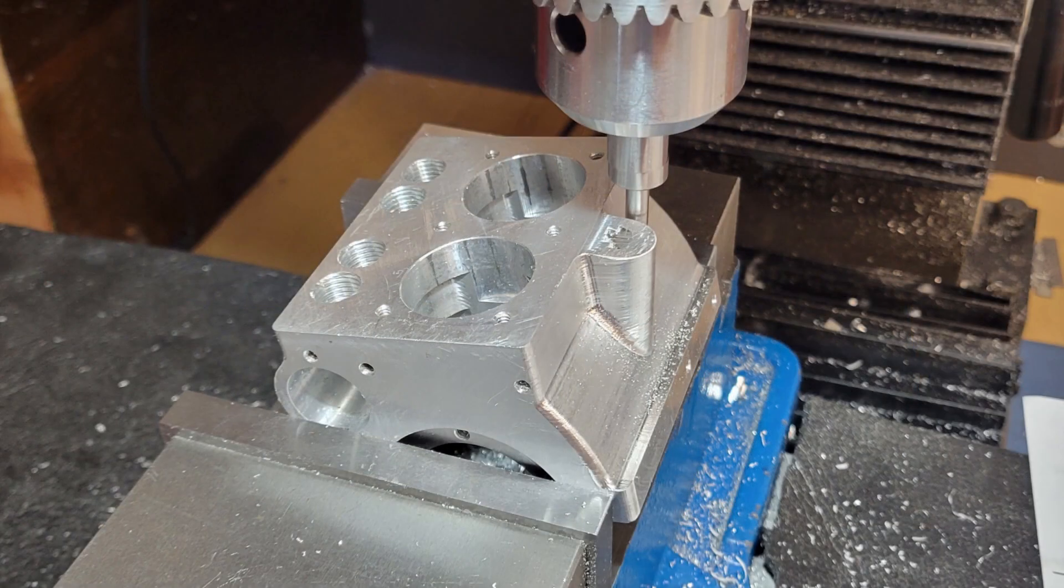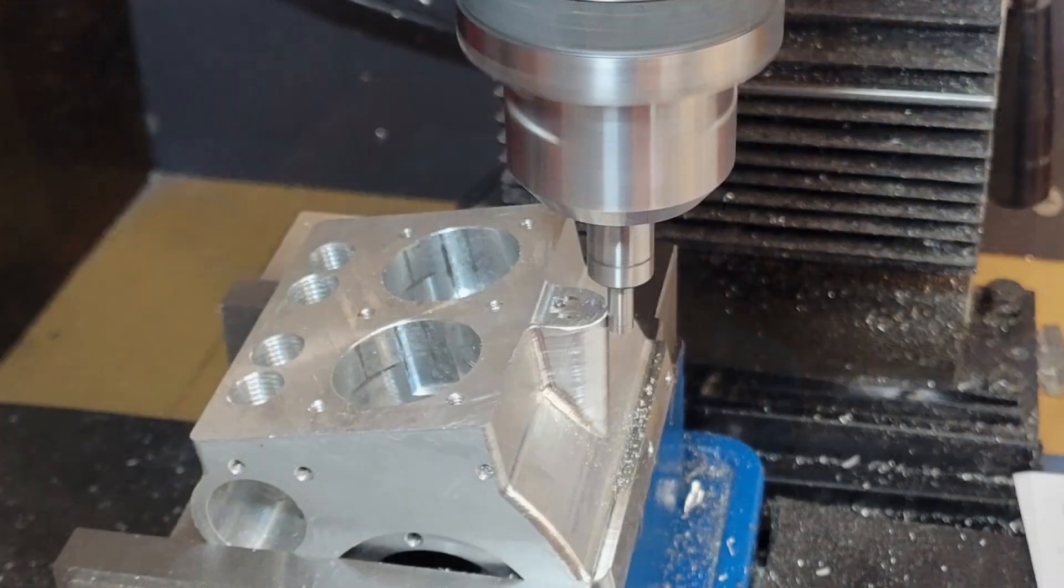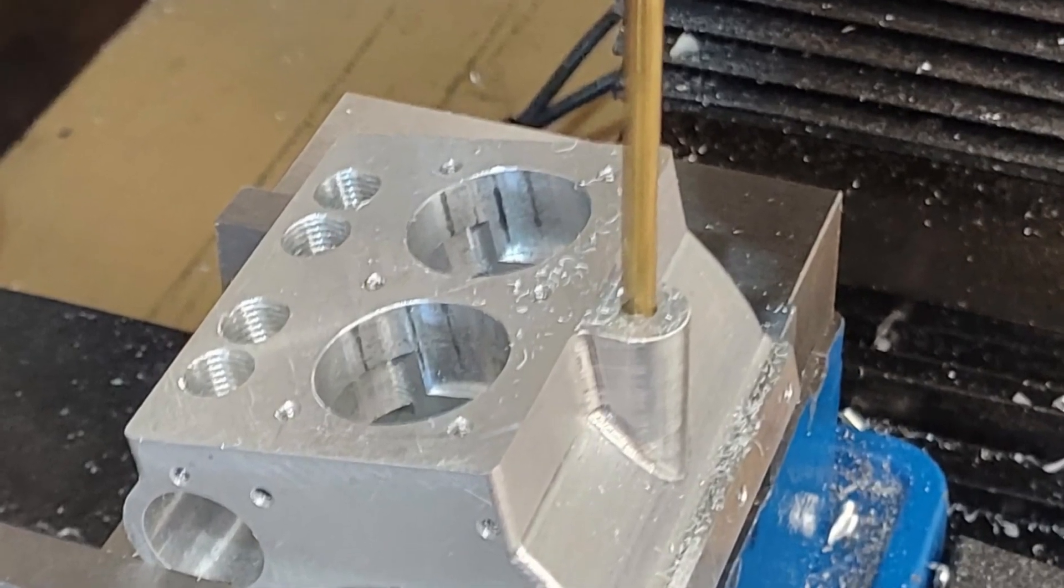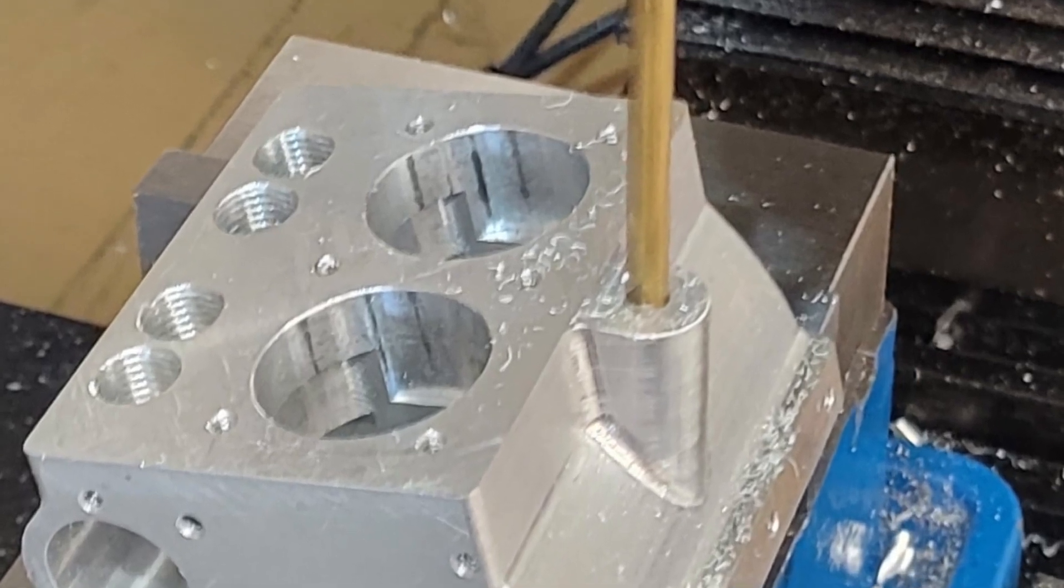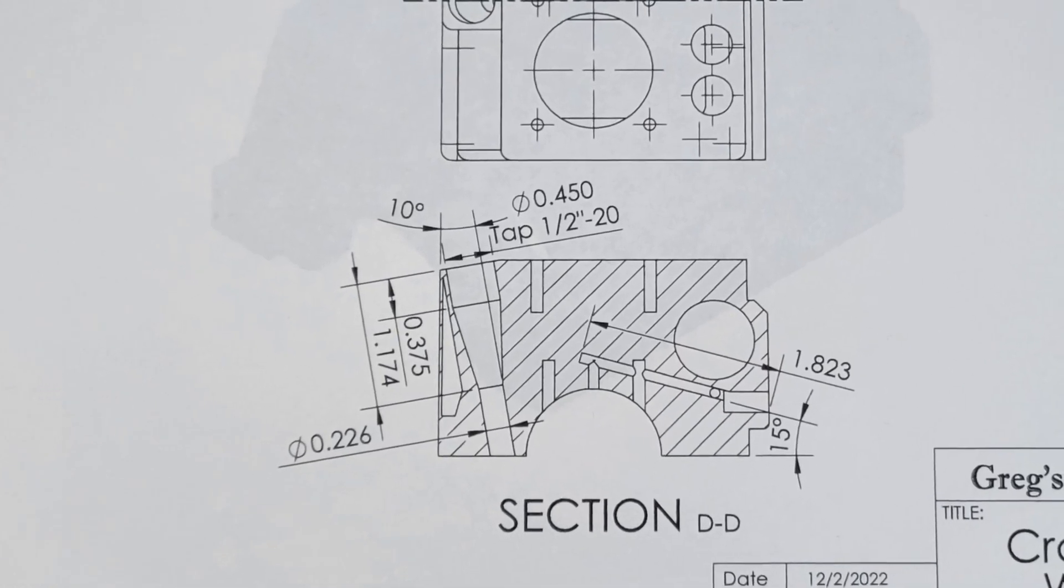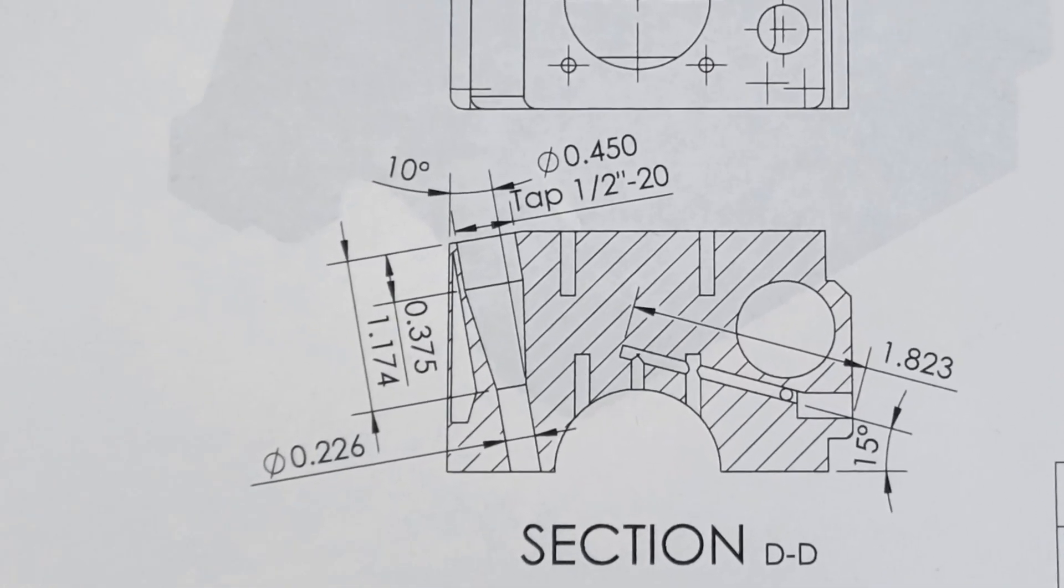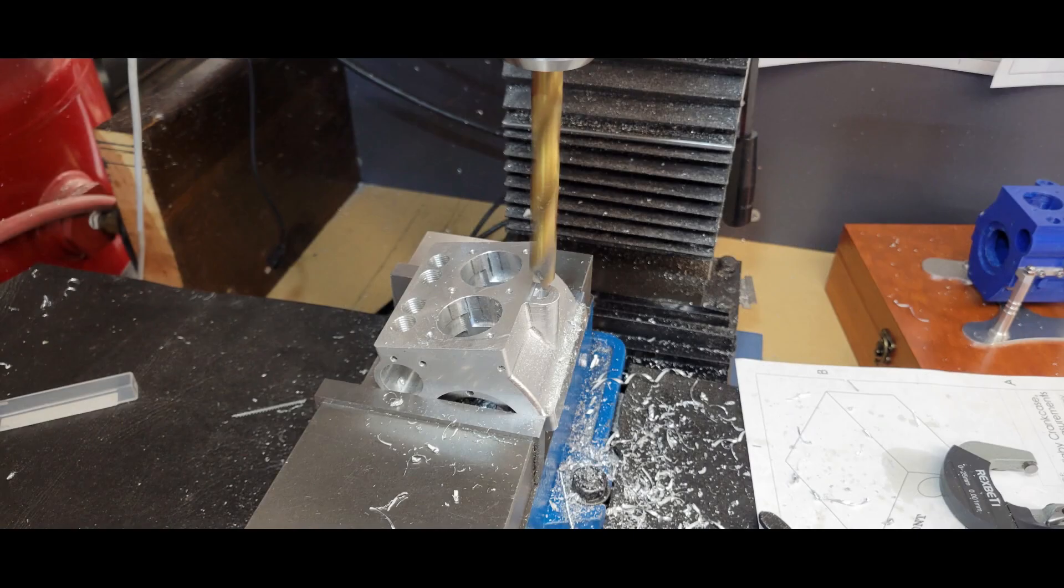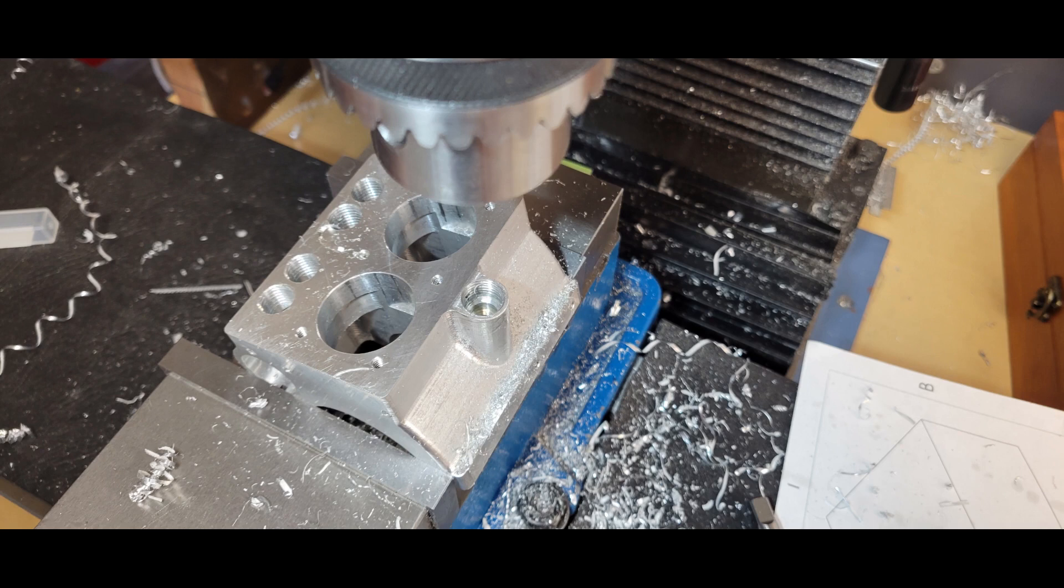Once we have the crankcase oriented the way we like, it's a standard drilling operation. However, we will use three different size drill bits. The first drill bit, I would use slightly undersize and go all the way through, and then peek under the part to make sure our breakout is in the proper place. We'll drill all the way through with a 0.226-inch drill. We'll finally drill with a 0.45-inch drill bit 3-8 of an inch deep, and tap 1-half-20.